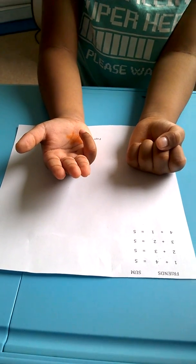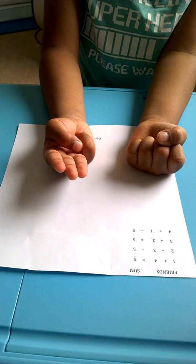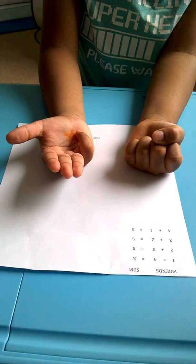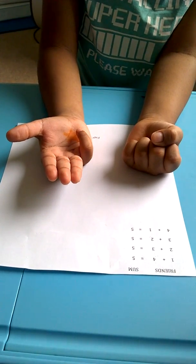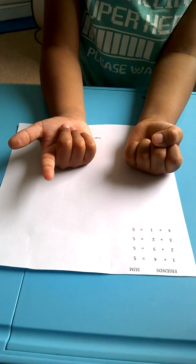Let's try again now. 3 plus 3. So, we open the 5, and the friend of 3 is 2. So, we minus the 2. The answer is 6.